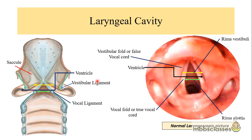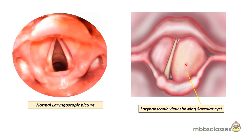To understand the site of origin better, a diagram is given comparing the endoscopic picture with the schematic coronal section. This shows the ventricle and the saccule. If any mass arises from the anterior part of the ventricle, it will definitely obscure the laryngeal inlet, causing stridor and respiratory obstruction in neonates.